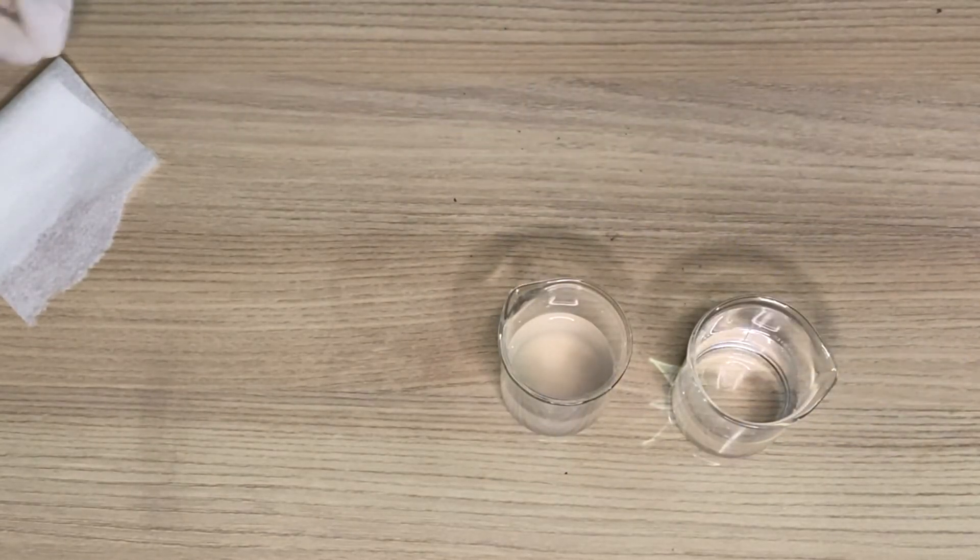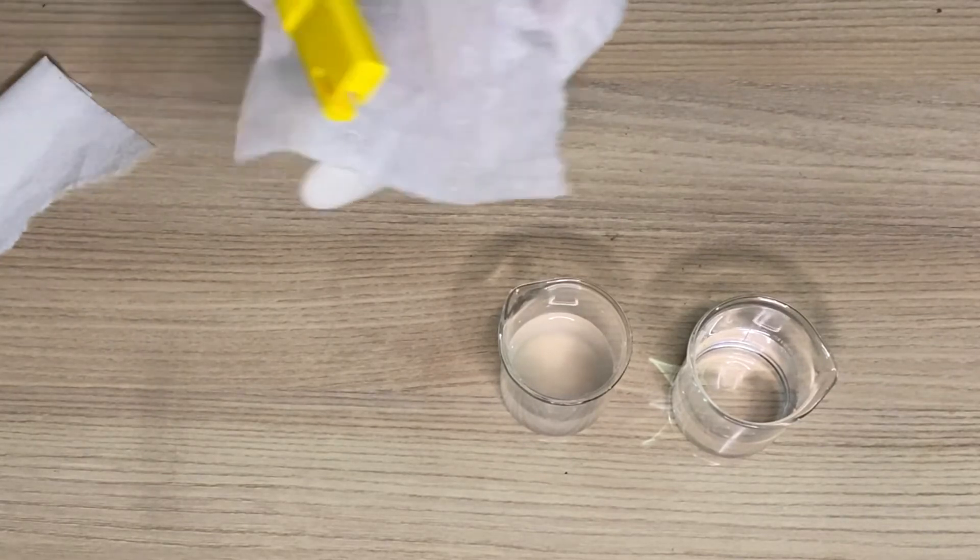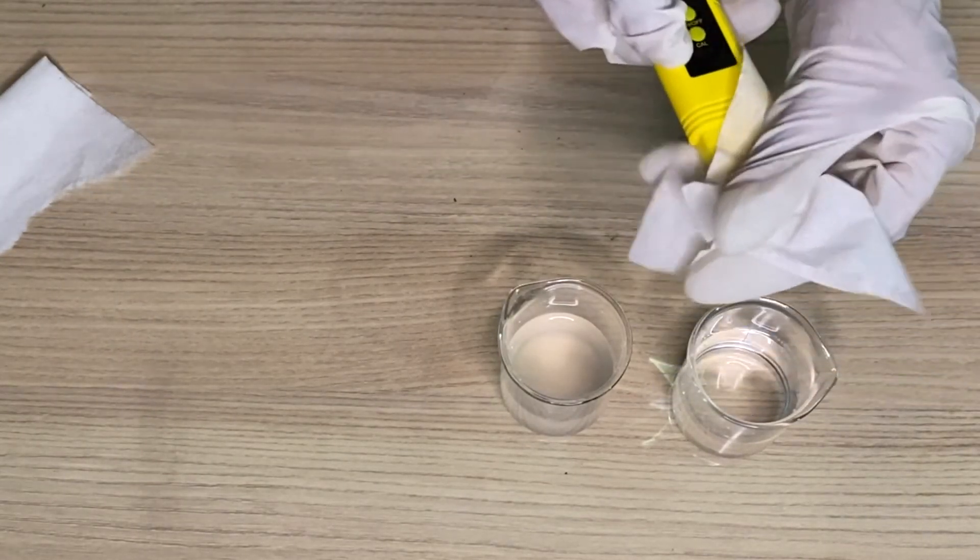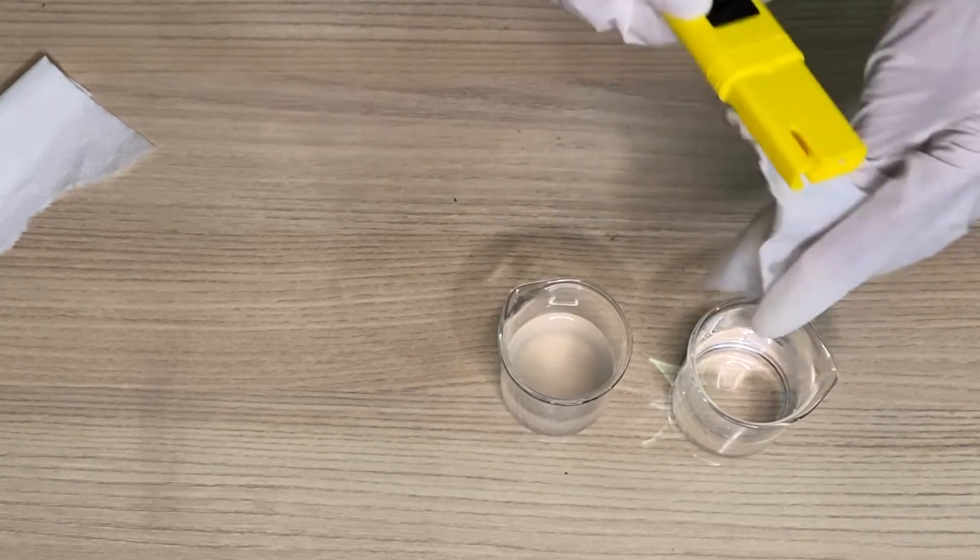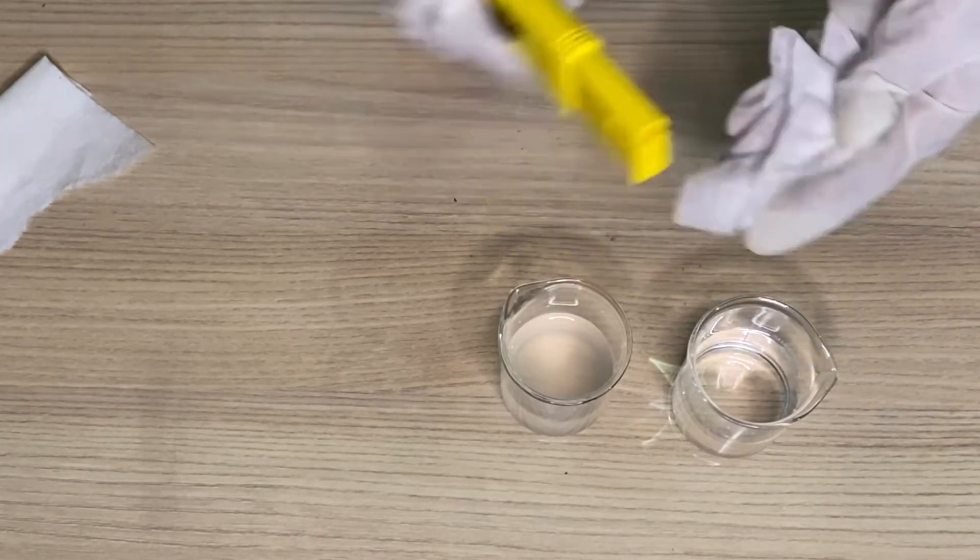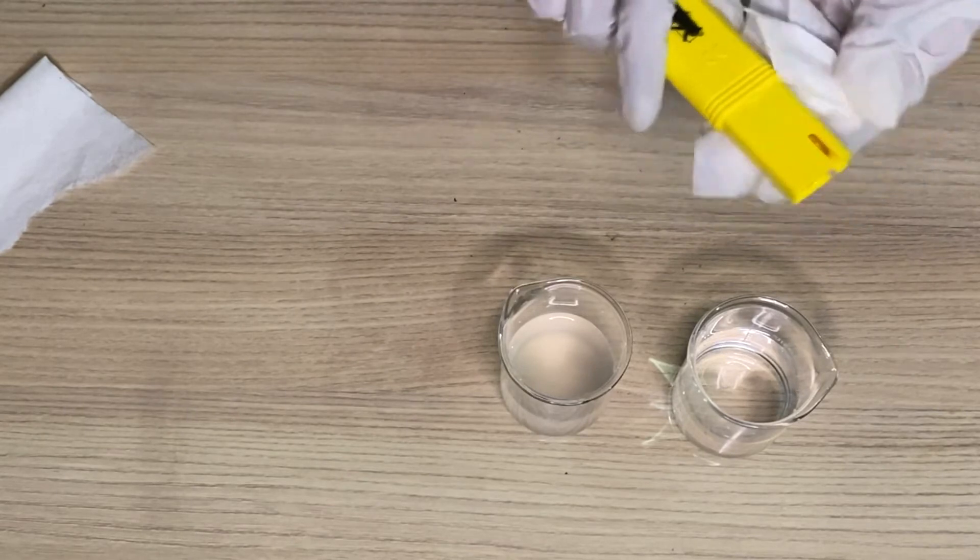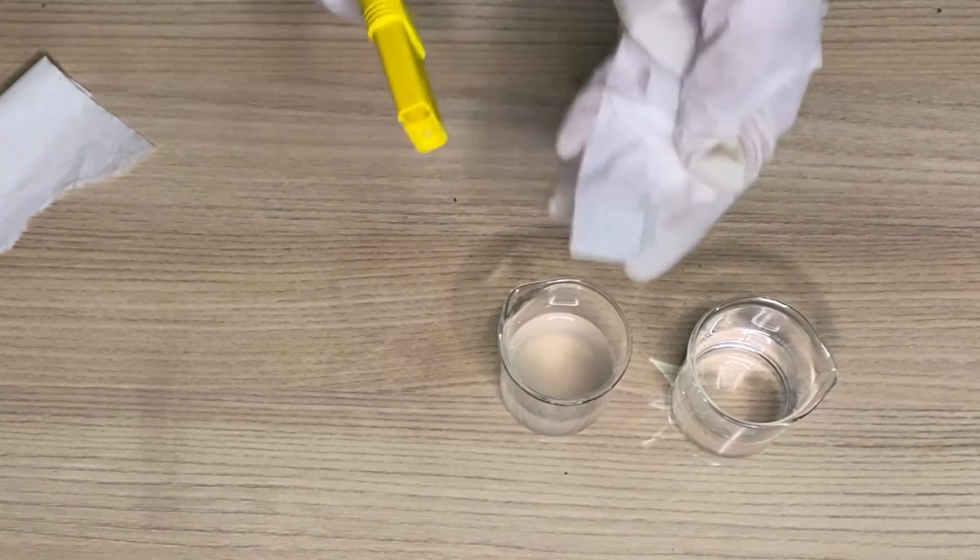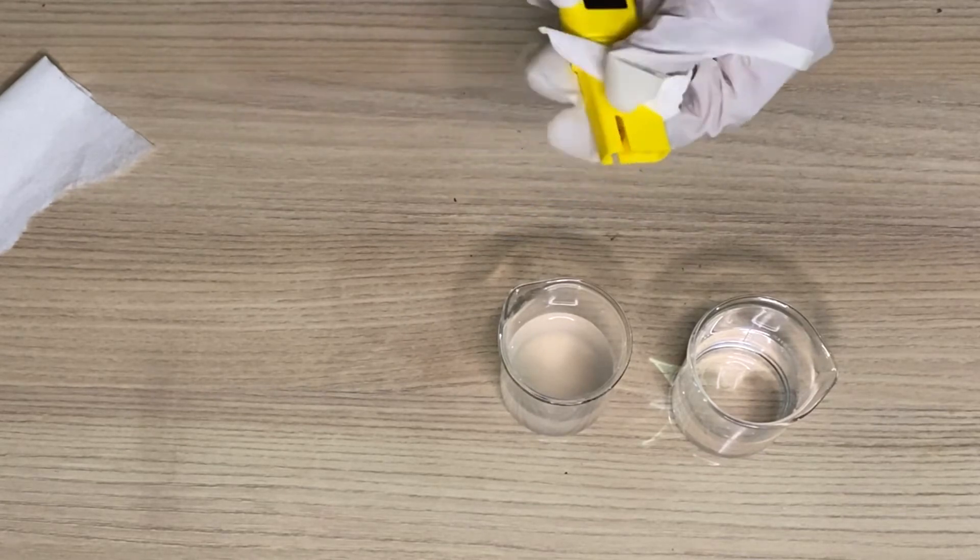To increase the pH you can add TEA or NaOH diluted solution. To decrease the pH you can use citric acid or lactic acid. After adding few drops in the product, again you need to test it in the same way. Again make some 30 gram or 50 gram batch, test the pH.